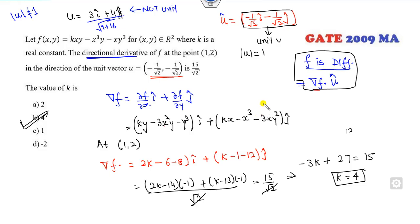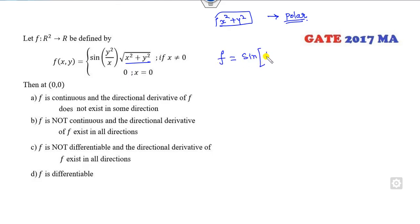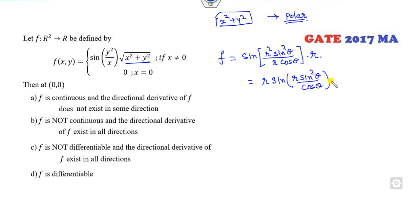For the question involving continuity, differentiability, and directional derivatives: since there is an x²+y² term, convert to polar coordinates. The function becomes r²·sin²θ·(r sinθ)/(r cosθ·r) = r·sin(r·sin²θ/cosθ). As r→0, since sin is bounded by 1 and r→0, the limit goes to 0, which is finite. So the function is continuous — the 'not continuous' option is cancelled.